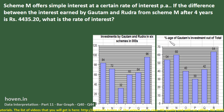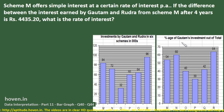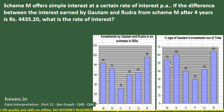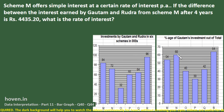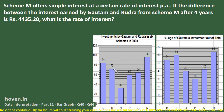The second chart shows the percentage of Gautam's investment out of the total. This is the combined investment, and this is Gautam's share. So in scheme M, Gautam invested 54% of 84,000. In scheme N, he invested 60% of 72,000, and the remaining 40% of 72,000 was invested by Rudra. This is how we read both charts together.